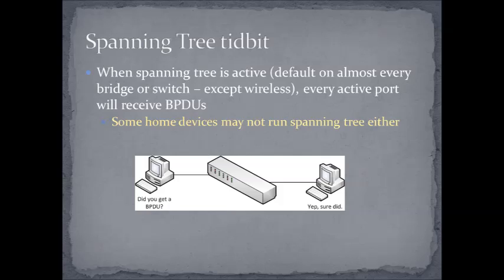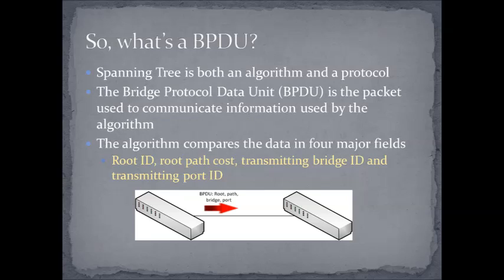Here's a little spanning tree tidbit: spanning tree is active on almost every single bridge or switch in the network, with some exceptions. For example, wireless bridges often do not do spanning tree — that's because we don't want them to be the root of the spanning tree. Small devices such as those on your home network also often do not run spanning tree. But if you hook a couple of PCs to a standard switch or bridge, you're going to get spanning tree messages called BPDUs, so it's on all the time. Hosts or nodes may receive BPDUs but they don't care about them. BPDUs are there to provide spanning tree information between switches. One switch will send a BPDU to another, and it is rare to have a switch respond with its own BPDU unless there are specific conditions.